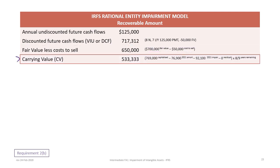The carrying value must be recalculated. We take the originally capitalized amount of $769,000, minus $76,900 amortization, less the impairment from the previous year of $92,100, minus zero salvage value. Multiplying by eight of nine years remaining gives a carrying value of $533,333.